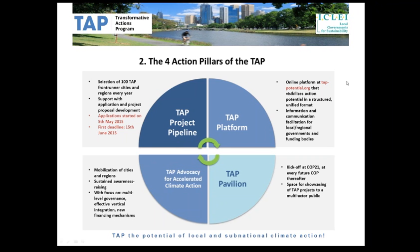The second pillar is the TAP platform. Before the COP, all projects submitted by cities and regions will be featured on this online platform in a unified format. The idea is that the platform will centralize the projects and make them more visible, enabling financing institutions to access relevant information about them and consider financing.